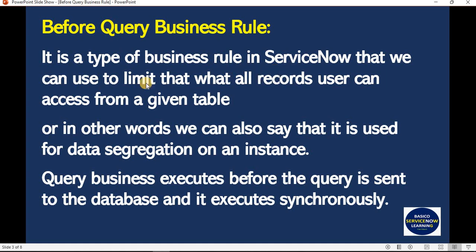A before query business rule is a type of business rule in ServiceNow that we can use to limit what records a user can access from a given table — such as incident, problem, change, or any table. It applies at the row level, so it works on list views. In other words, it is used for data segregation. It executes before the query is sent to the database and it executes synchronously.